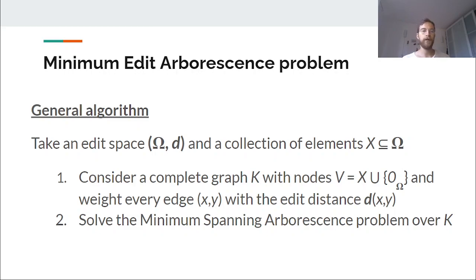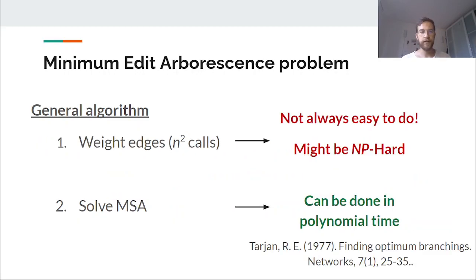It looks simple, but there's a major problem in practice. And it's that in general, finding the optimal edit paths between objects is an NP-hard problem. This is true particularly for graphs. And moreover, this edit path computation must be called n squared times. So this constitutes an important bottleneck.